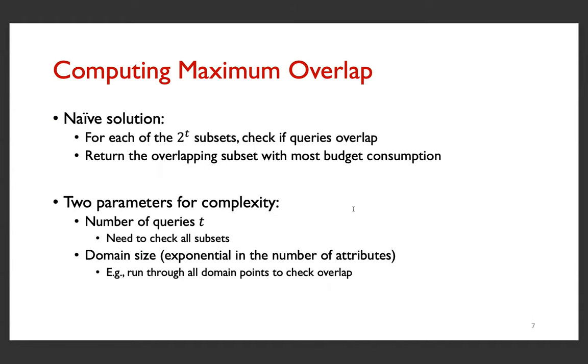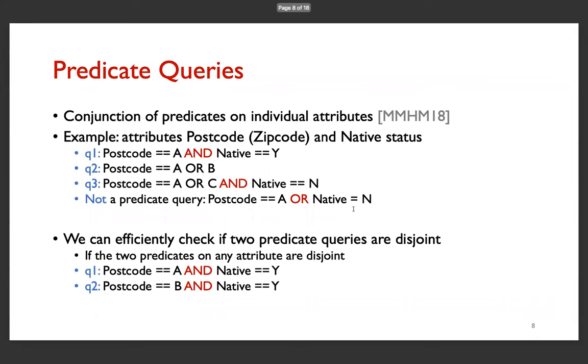How do we compute that? A naive solution would look at all the possible subsets of queries to check if they overlap. There are two different parameters which affect the complexity. One is the number of queries, because we need to check all possible subsets. The other one is the domain size, which is exponential in the number of attributes. In order to check if queries overlap, we need to go through all the domain points in the naive way. And notice that the domain points is different from the actual data points. The domain points cover all possible data points that there could be.